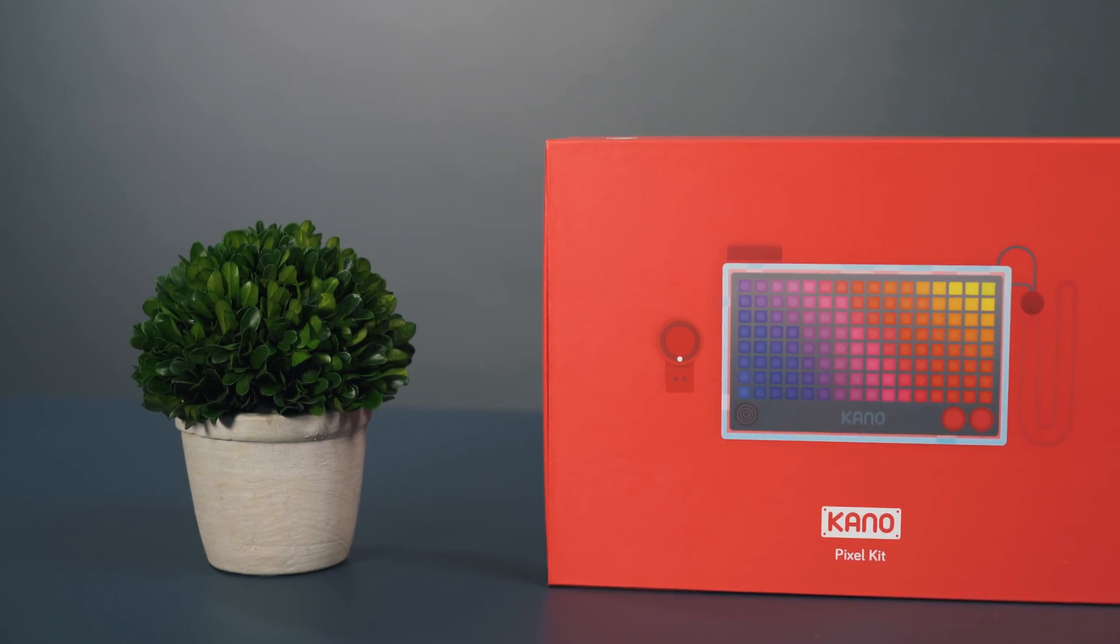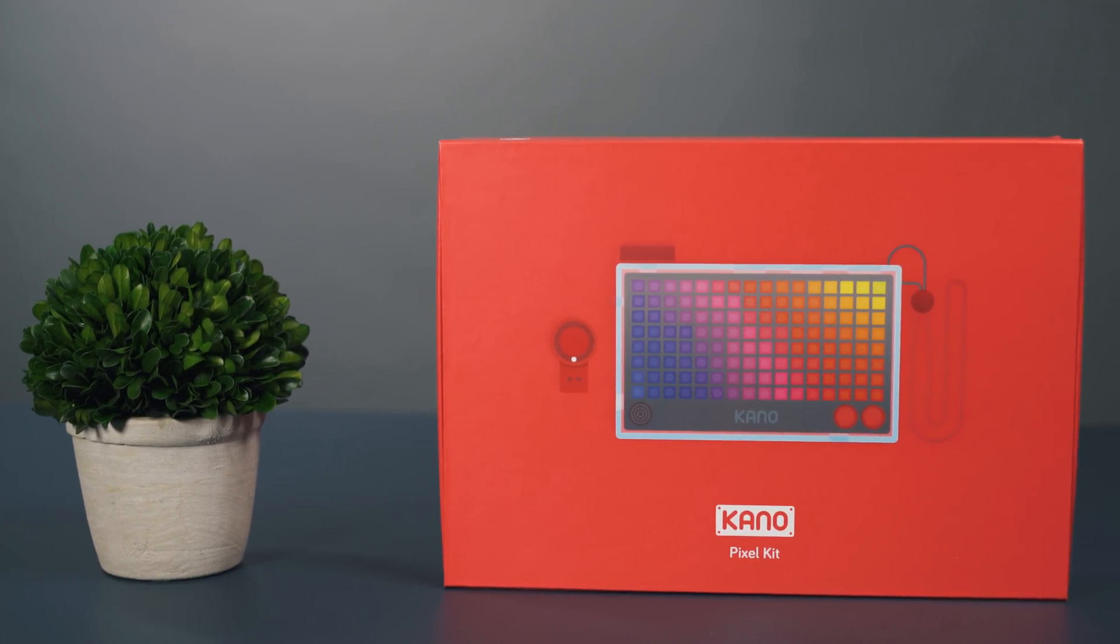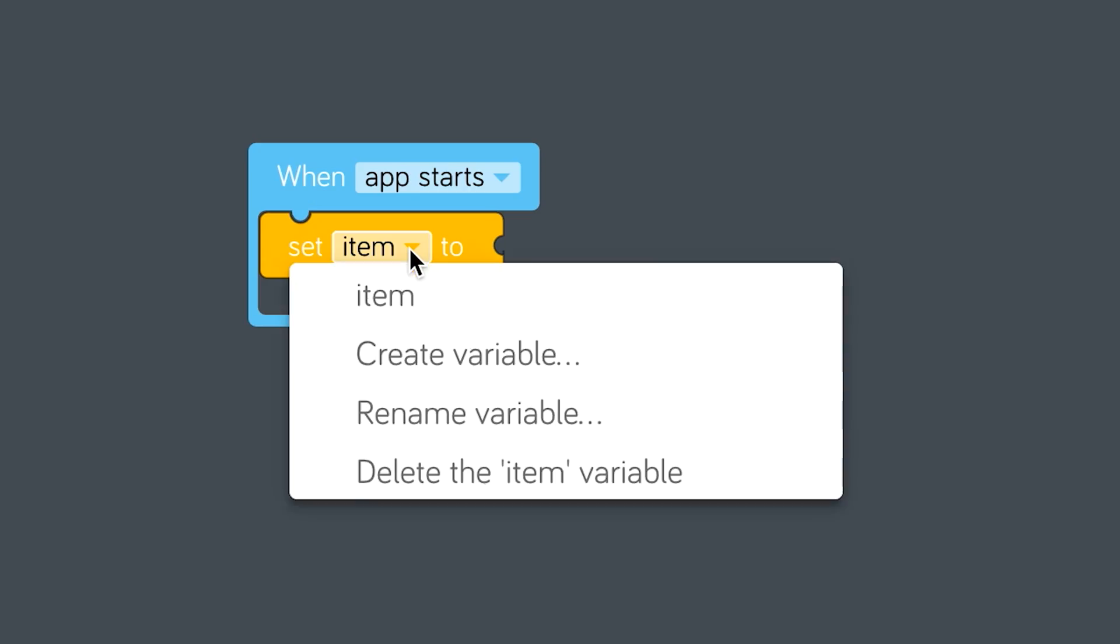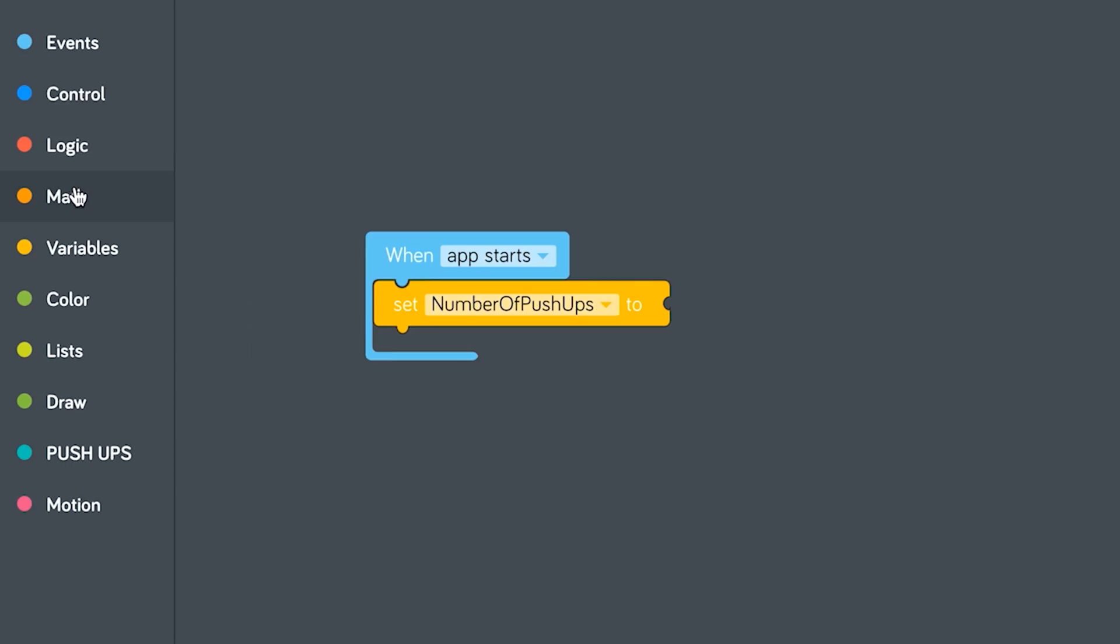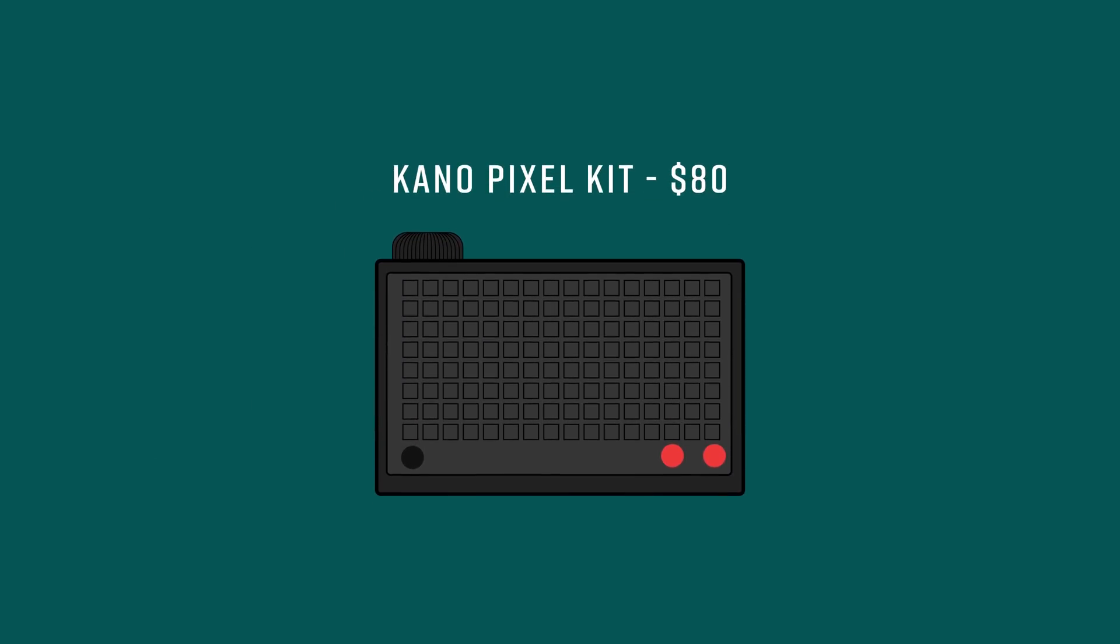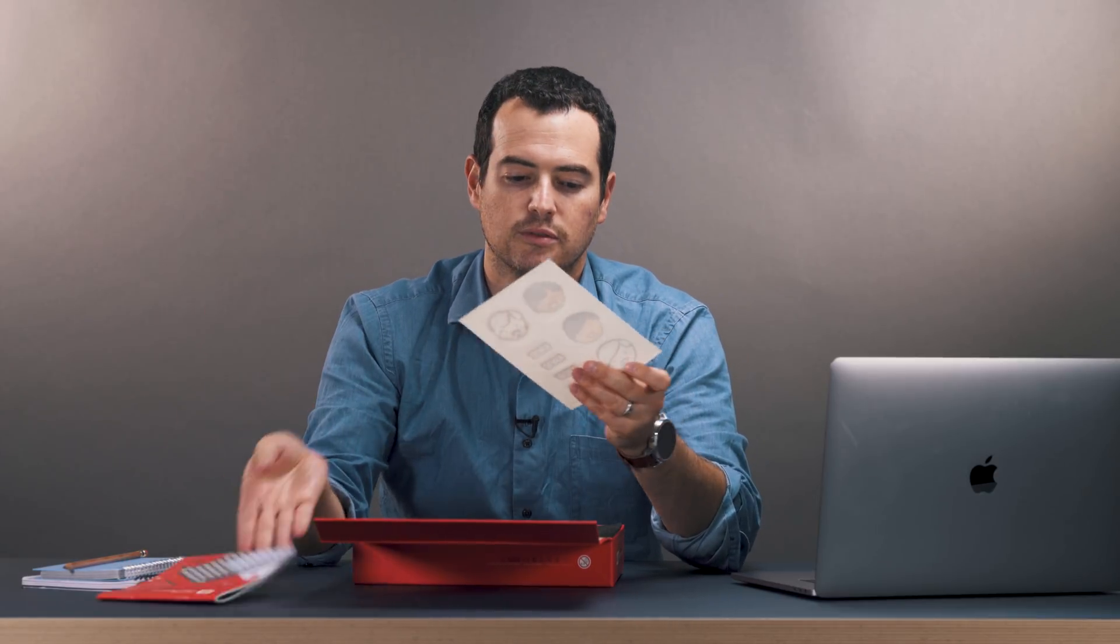We got Kano. So supposedly the reason I was attracted to Kano, aside from its pretty red box, is that it makes coding super simple. It's drag-and-drop coding like Scratch, which for me makes sense. If you use JavaScript, if you're more advanced, it'll work with a Mac or a PC. It's a self-contained computer with ports.